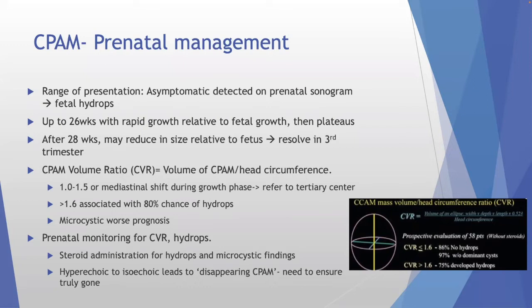If less than 32 weeks or early delivery is planned, an EXIT procedure may be considered — you use the placenta essentially as anesthesia, keeping the baby connected to the mother while securing the airway, which is ideal for large lung masses requiring resection before intubation. Another option is C-section with ECMO standby, planning immediate cannulation at birth followed by resection. Emergency surgery at birth for CPAMs is actually very uncommon — most present asymptomatically.